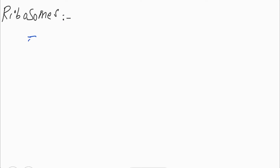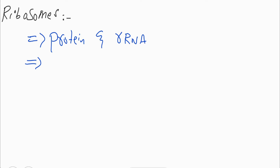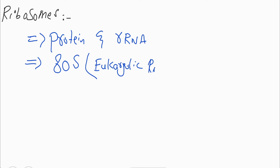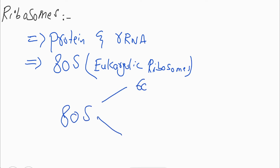Ribosomes exist as separate subunits that are composed of protein and ribosomal RNA. Eukaryotic ribosomes are large 80S ribosomes, which have two subunits: 60S, which is the large subunit, and 40S, which is the small subunit.